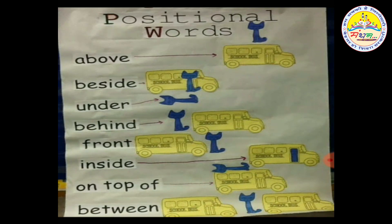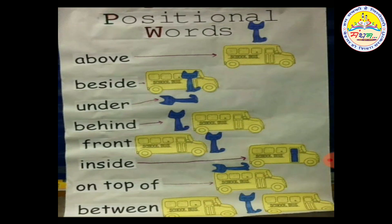Where is the cat? The van is ahead. The cat is in front of the van. Next, the cat is inside the van. The cat is inside the van.